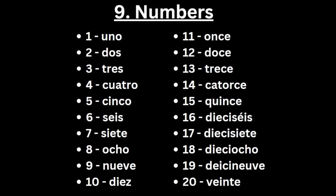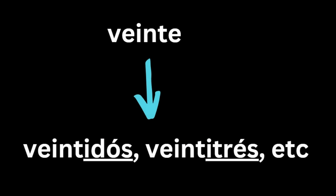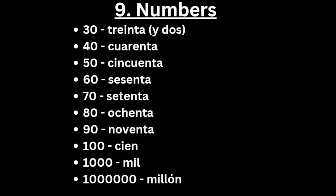Numbers: uno, dos, tres, cuatro, cinco, seis, siete, ocho, nueve, diez, once, doce, trece, catorce, quince, dieciséis, diecisiete, dieciocho, diecinueve, and veinte. Past 20, you take veinte and add any number you want, written as one word — like veintidós or veintitrés. Thirty is treinta y [number], like treinta y dos. Forty is cuarenta, then cincuenta, sesenta, setenta, ochenta, noventa, cien, mil, and one million is millón.